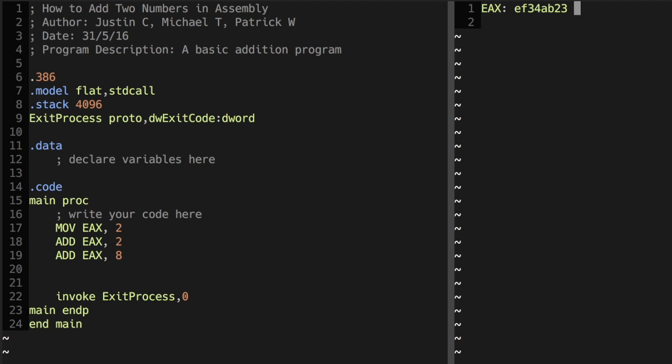So here we have a basic assembly language program that adds two numbers together. On the left, we have the source code. And on the right, we have a representation of the values of the register EAX. You may recognize some of the instructions in the code section here.